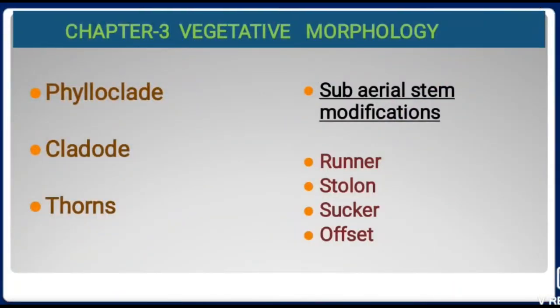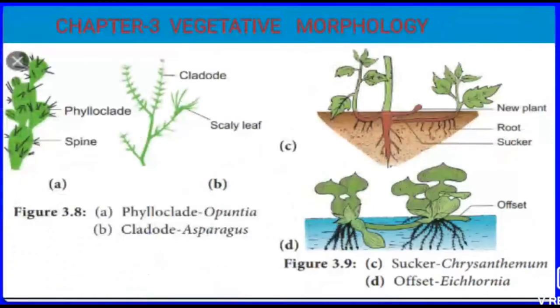Today we are going to learn a new topic from Chapter 3: Vegetative Morphology — phyloclad, cladode, and thorns. Also expect five more questions on sub-aerial stem modification, which is further classified into four subtitles: runner, stolon, sucker, and offset.